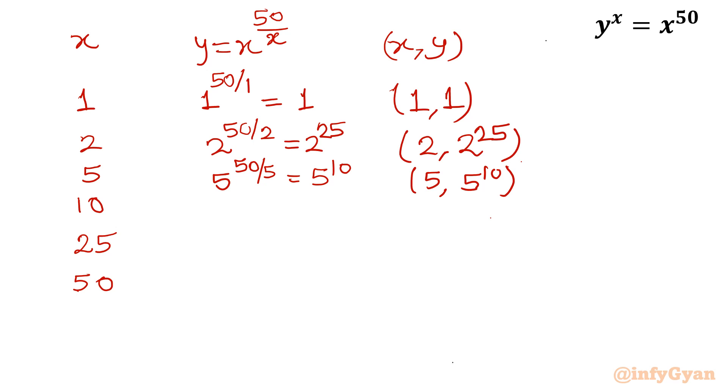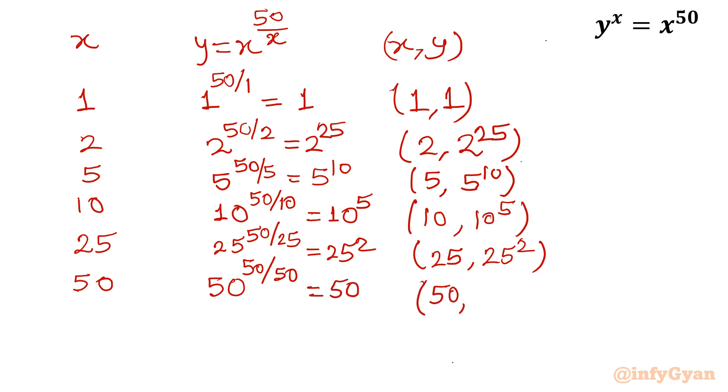x = 10: If I put x = 10, then it will become 50/10, it will come out 10 raised to power 5. Ordered pair will be (10, 10^5). x = 25: 25 raised to power 50/25, I will get 25 raised to power 2, so (25, 25^2). And last value is 50: 50 raised to power 50/50, so value will be 50, giving (50, 50).